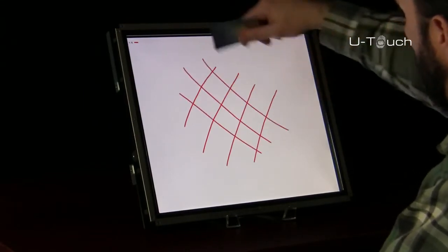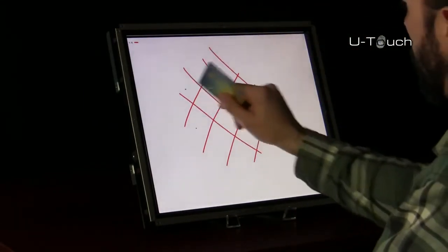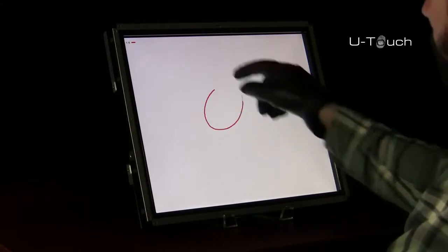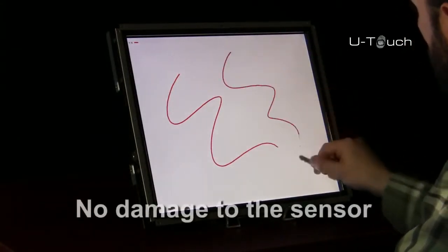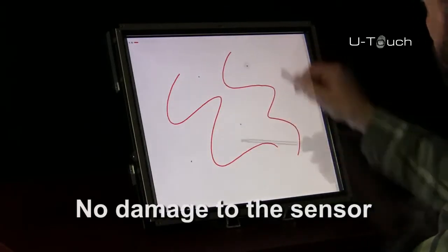First, we don't have the just-right touch requirements that limit other technologies. Gloved hands, credit cards, metal pens, bare fingers, or the tip of a screwdriver are all recognized as touch without inflicting damage to the sensor.